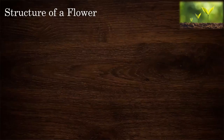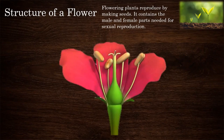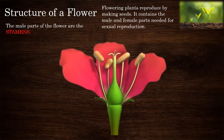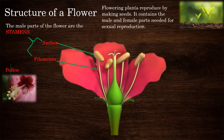This is the structure of a flower. Flowering plants reproduce by making seeds. Flowers contain the male and female parts needed for sexual reproduction. The male parts of the flower are the stamens. The filaments hold the anther, which produces pollen.